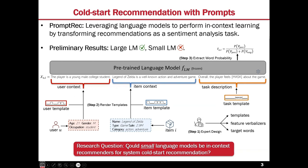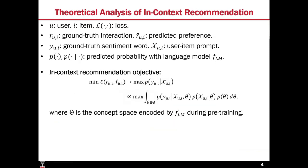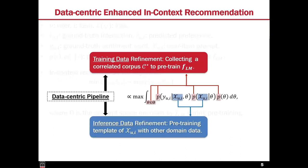Through experiments, we found that large models work well with PromptRec, but smaller ones fail. This naturally raises a question: could small language models be an in-context recommender for our task? To study this problem, we first build the connection between in-context recommendation and language modeling. In addition, by making the hidden Markov model assumption, we reach another form of the in-context recommendation objective.